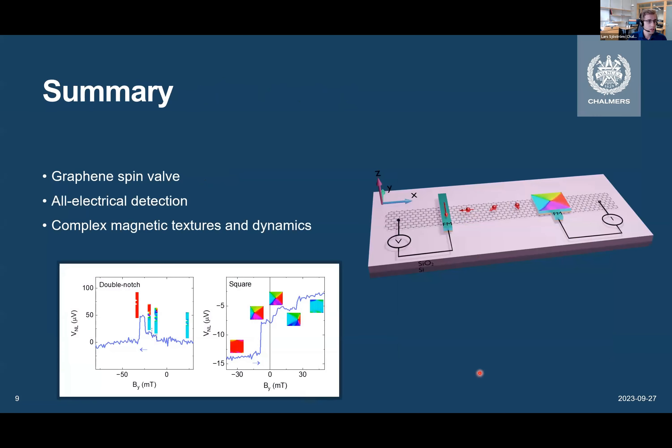So, in order to give a brief summary, we have shown here today that we can use graphene spin valve devices for all electrical detection of quite complex magnetic textures, as well as their dynamics. And this shows a lot of promise for spin-based memory devices, and further beyond that, it shows promise towards fast and energy-efficient next-generation spintronics components for better computing.